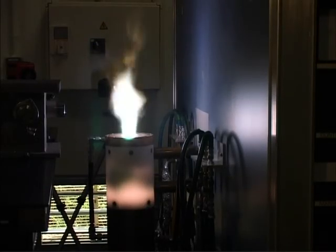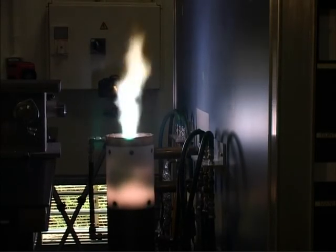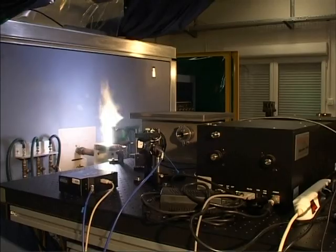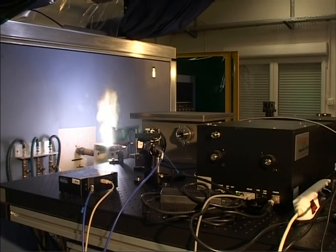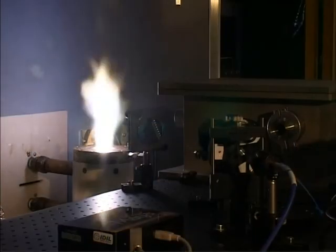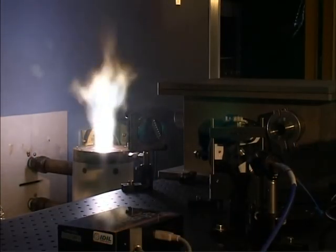Nozzle exit diameter for the torch can be varied from 1 to 7 centimeters. This, combined with different power settings, allows us to produce heating conditions applicable to atmospheric entry, between 1 and 10 megawatts per meter squared.